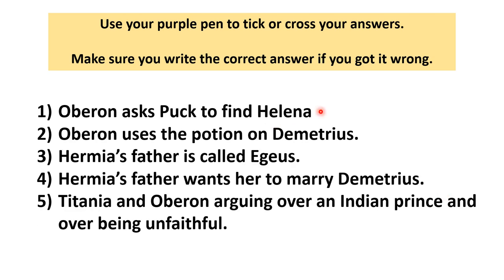So Oberon asks Puck to find Helena. Oberon uses the potion on Demetrius. Hermia's father is called Aegeus. Hermia's father wants her to marry Demetrius. Titania and Oberon are arguing over an Indian prince and over being unfaithful. Remember, Titania accuses Oberon of being unfaithful with Hippolyta, and Oberon accuses Titania of being unfaithful with Theseus. Pause the video and make any purple pen corrections that you need to now please.